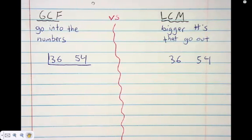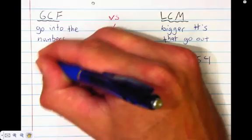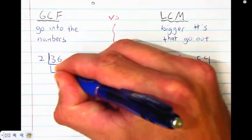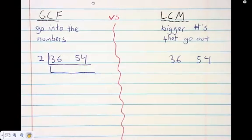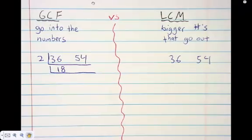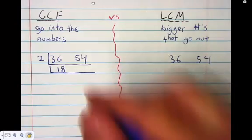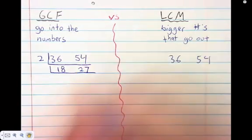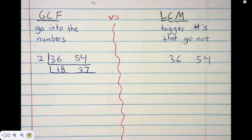You pick a number that goes into both of these. Two goes into both, so we put 2 outside. Two goes into 36 eighteen times, and two goes into 54 twenty-seven times.